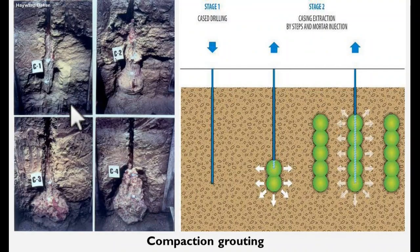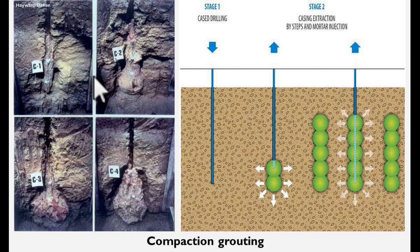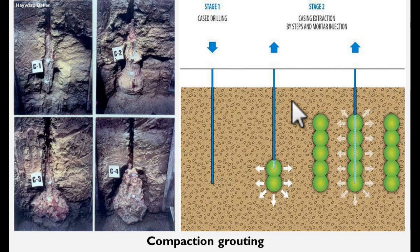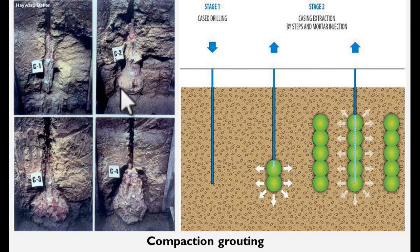This is a photograph related to the cross section of the ground where compaction grouting was done. You can see the portions where the grouting was done. You can see the fissures over there which are filled. This is an old grouted area. This schematic also shows how it is done — casing extraction step by step and the bulb is formed. It may not be exactly round; you can see this is an irregular shape actually.